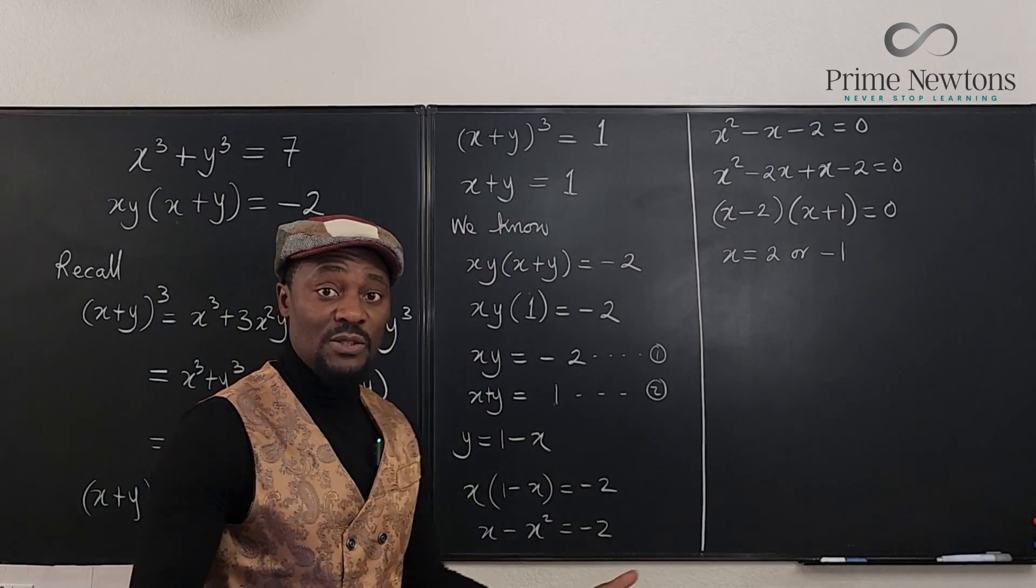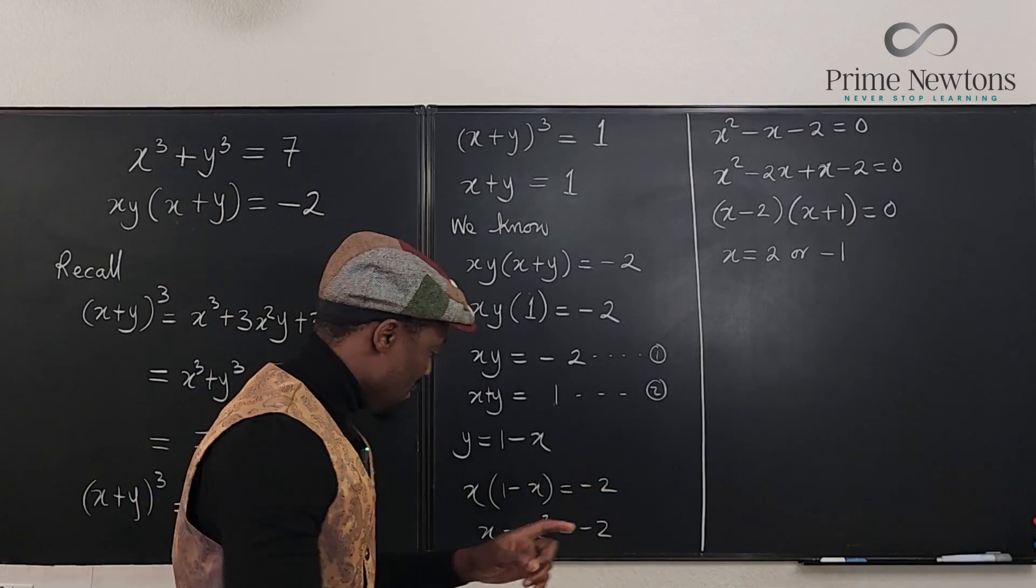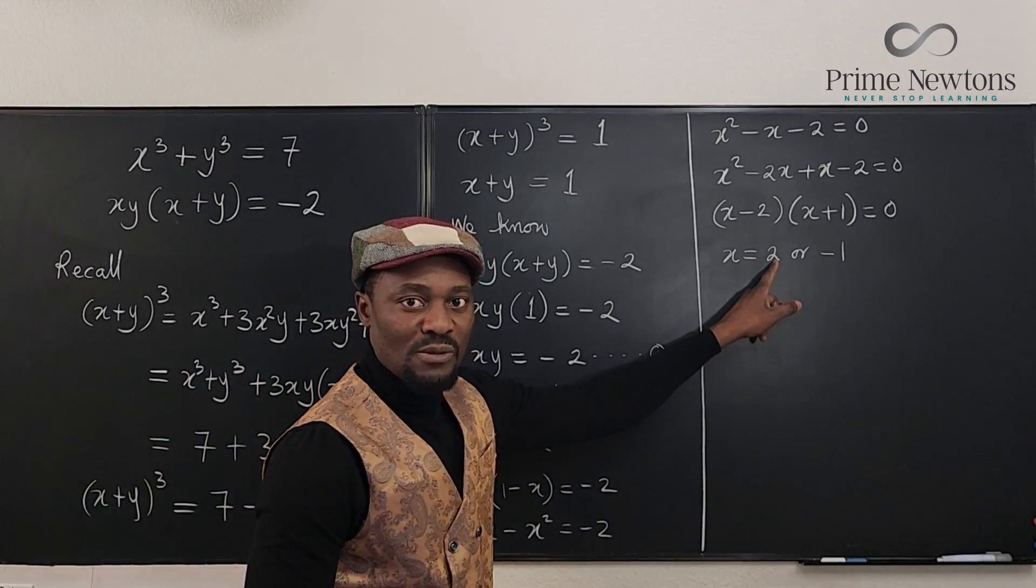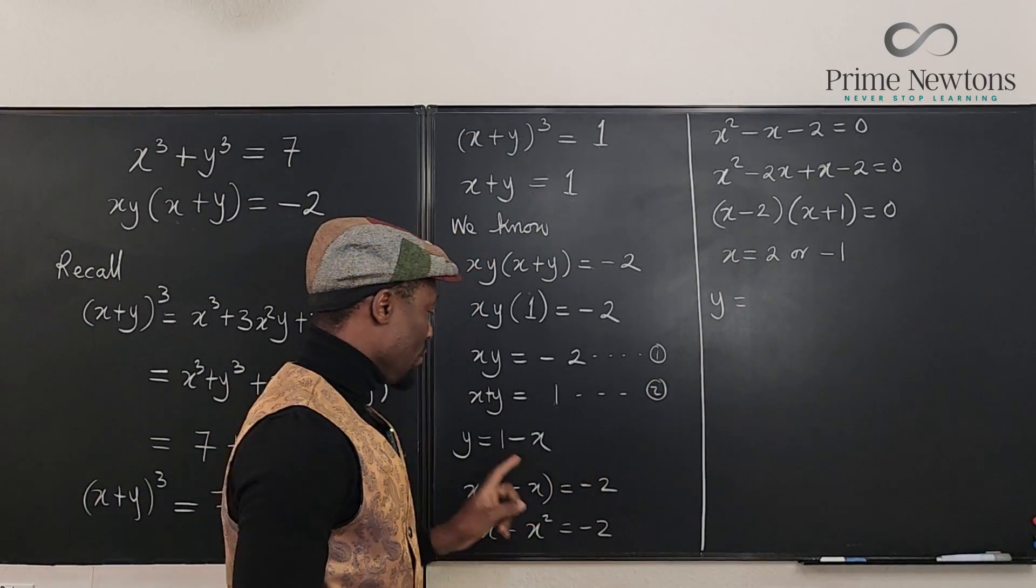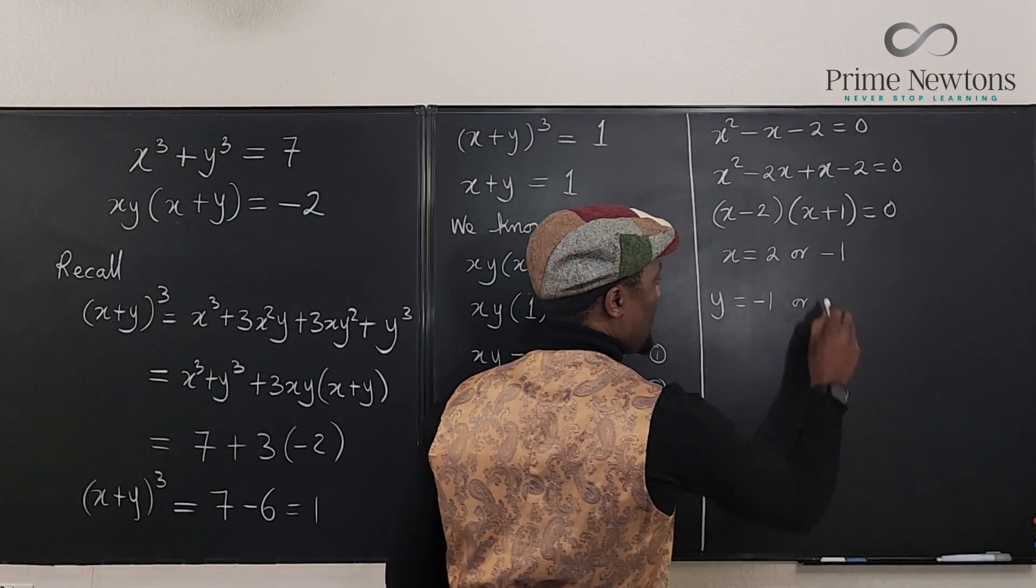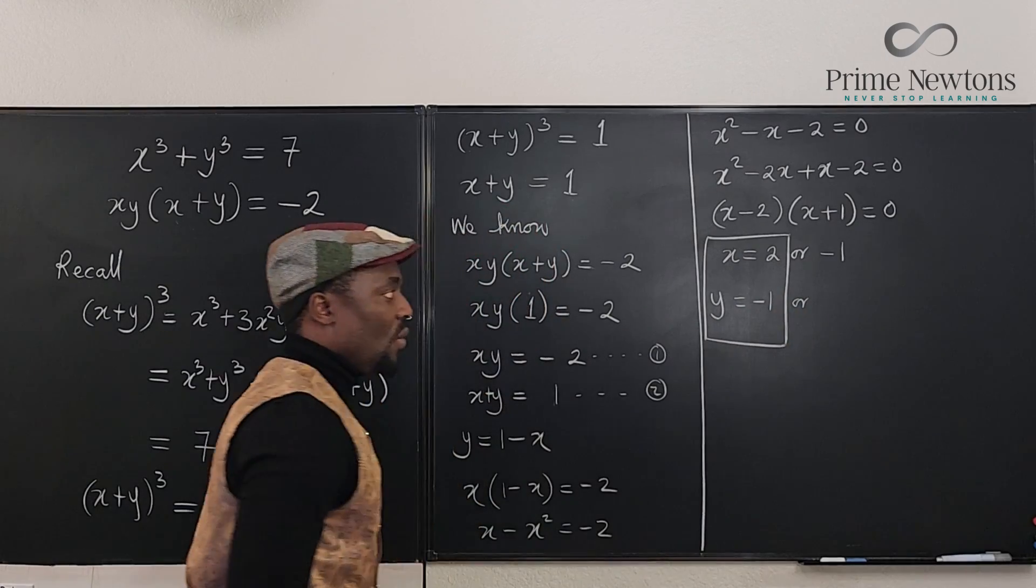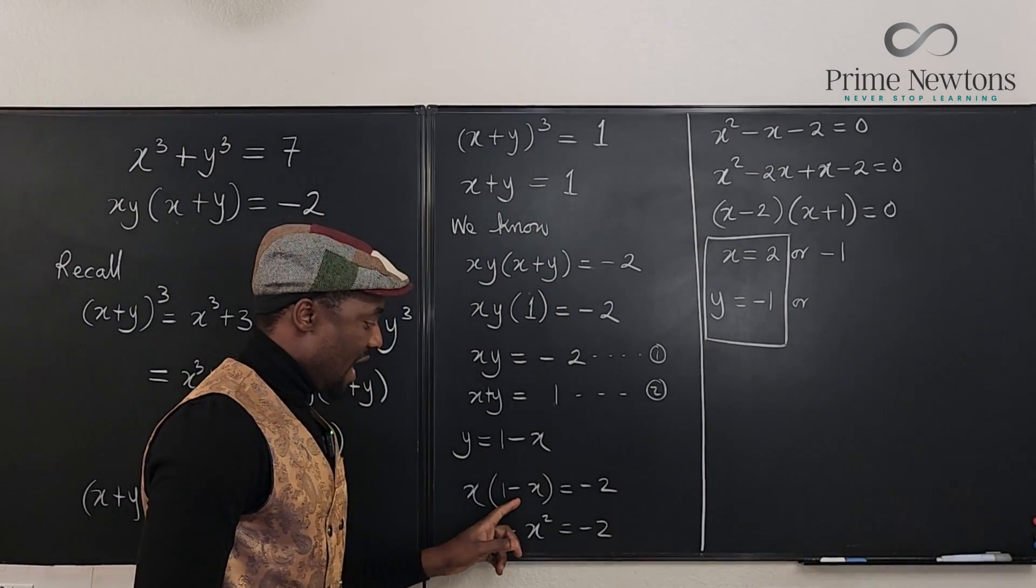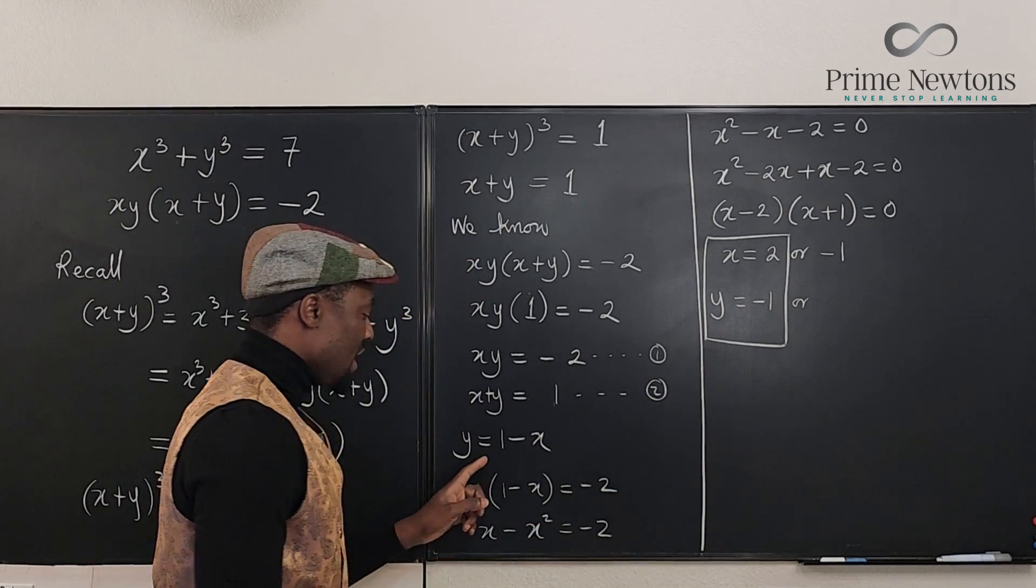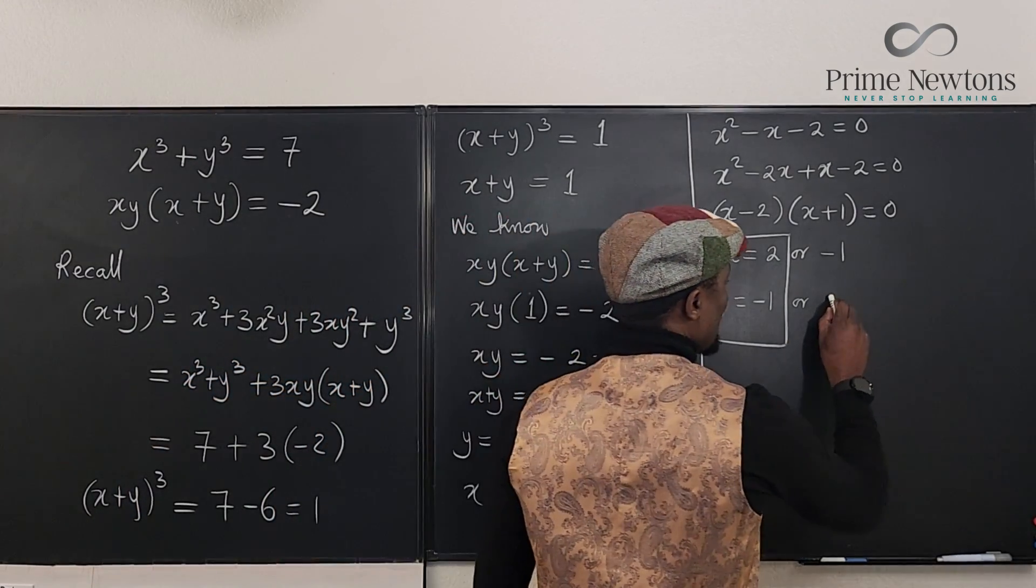That way. So those are the two possible options, possible values of x. Don't forget, we said y is 1 minus x. So when x equals 2, y equals 1 minus 2, which is minus 1. Or, so we box this. Or, when x equals minus 1, y equals 1 minus minus 1, which is 1 plus 1, which is 2. Okay, so or 2.